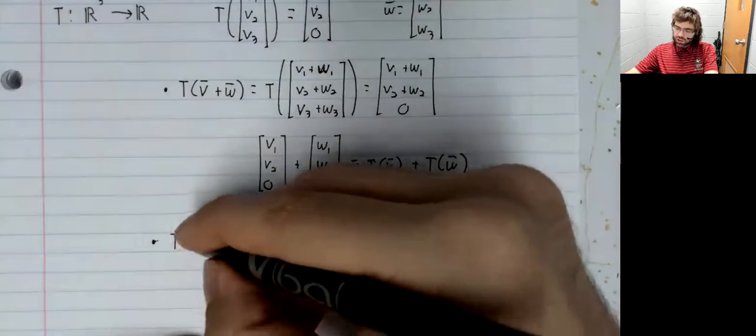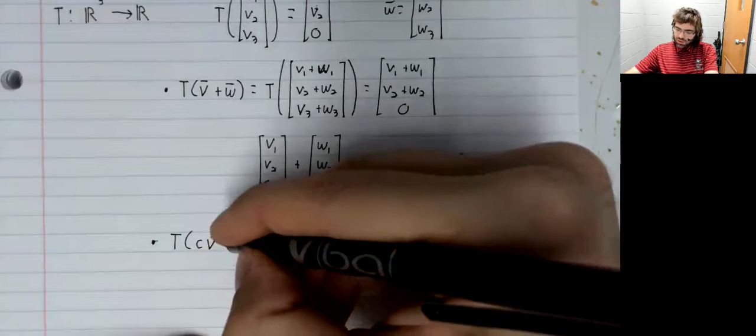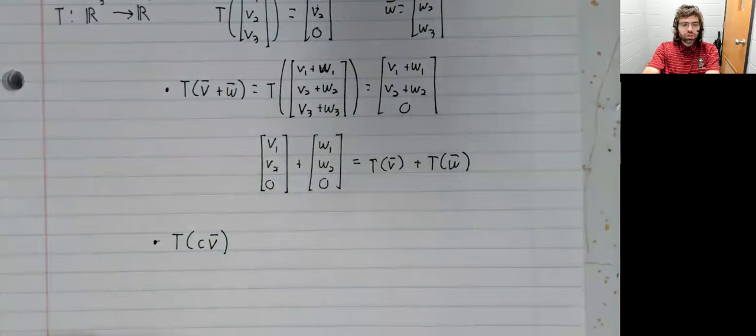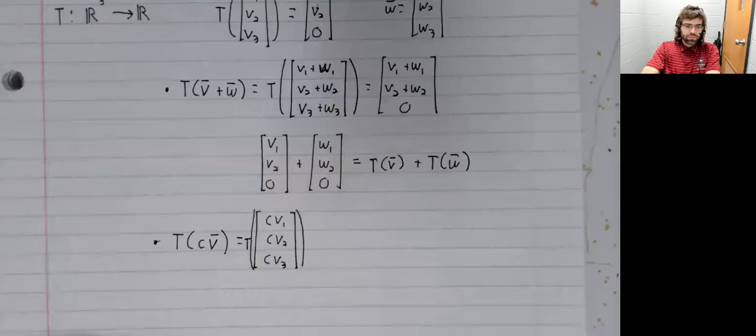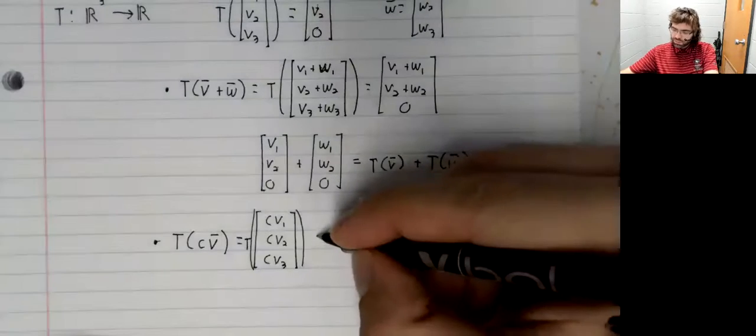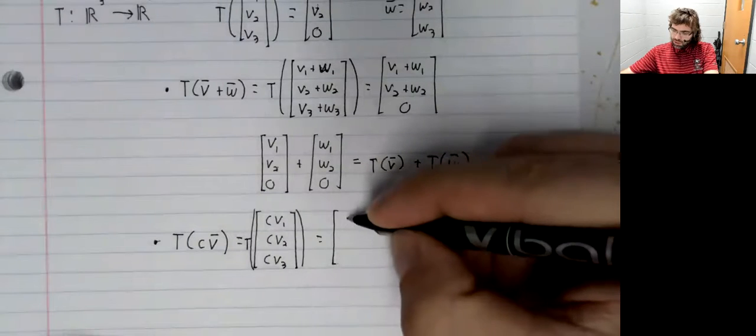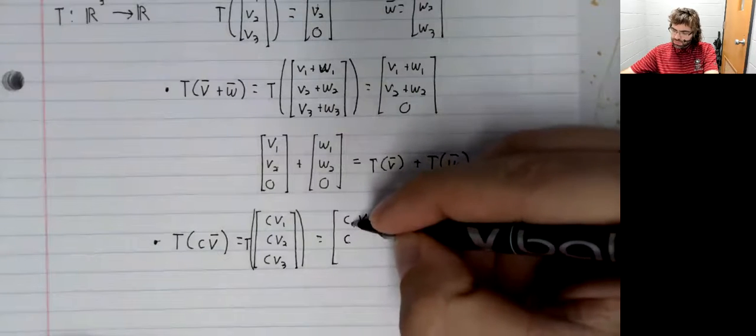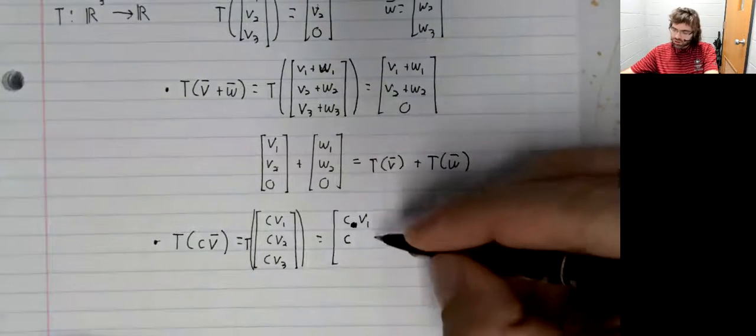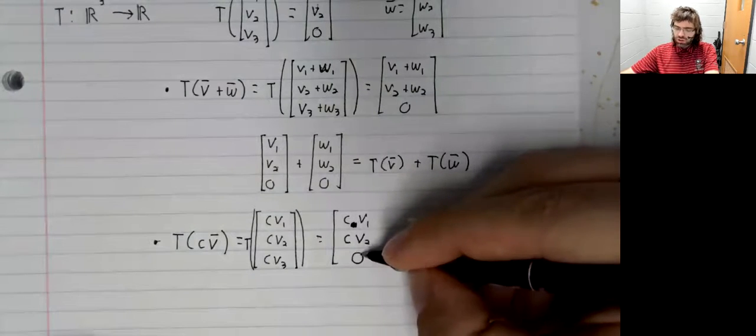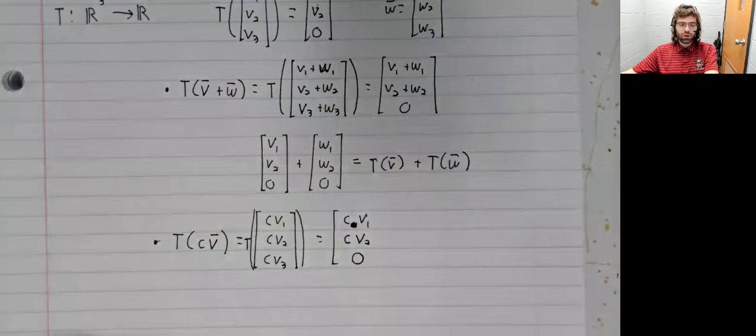Second condition. This is done pretty mechanically. We'll multiply c and v together, then apply T to this vector.